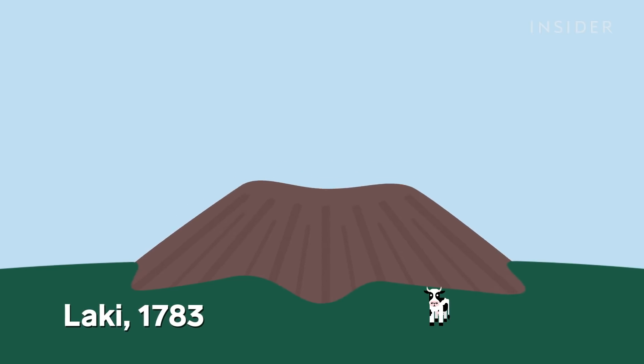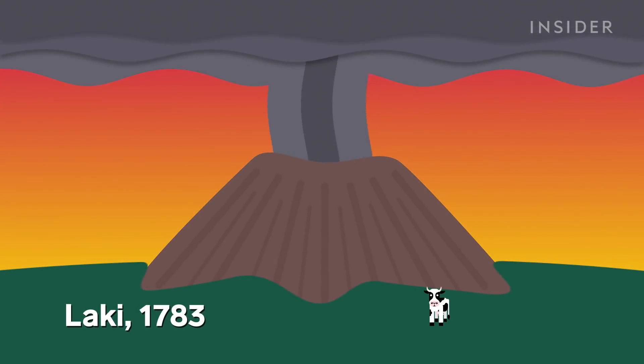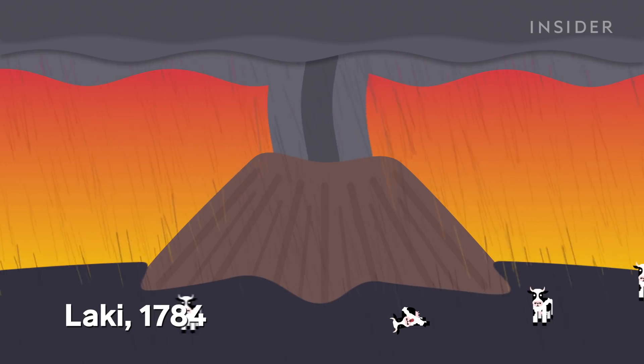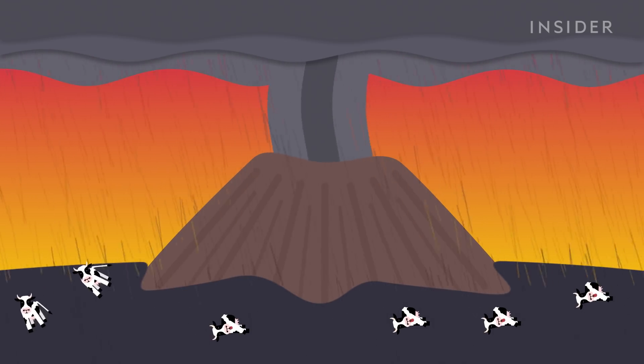When the Laki volcano erupted in 1783 in Iceland, it rained down so much sulfuric acid that it devastated farmland and wiped out half of all livestock. The next year, a full quarter of Iceland's population died in the resulting famine.